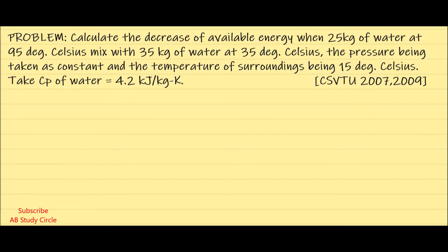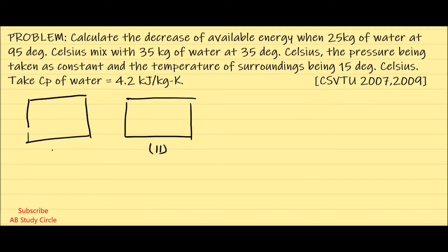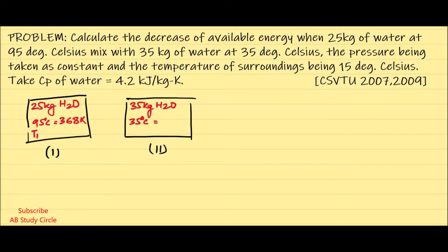Let's suppose we have two containers. Container 1 has 25 kg of water (H₂O) at 95°C, which converts to 368 K — call this T1. Container 2 has 35 kg of water at 35°C, which converts to 308 K — call this T2. The surrounding temperature T0 is 15°C, which converts to 288 K.